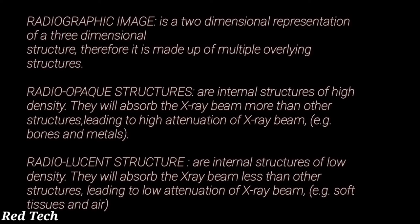The next term is radiolucent structure. These structures have very low density and very low attenuation power, so the x-ray beam passes through them easily. They allow less absorption. For example, air — as seen in a chest x-ray — appears black because the x-ray beam passes through it easily without being absorbed.